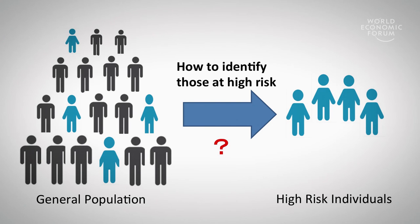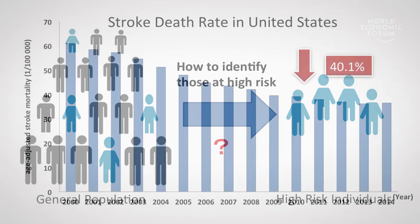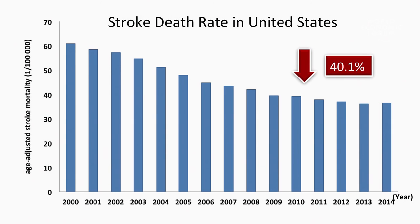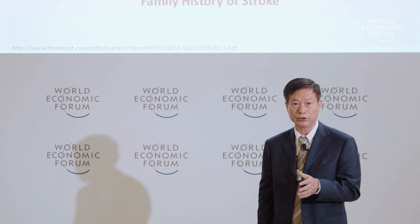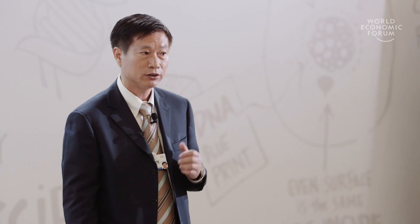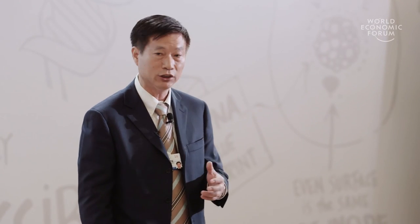How could we identify those at high risk for stroke and prevent the stroke epidemic? In the United States, age-standardized mortality was reduced by 40% in the past 10 years. The major improvement in stroke outcomes came from primary and secondary prevention. If you had close relatives who had a stroke at a younger age, you are more likely to develop stroke — but you cannot change your genetic background or reverse your age; however, there are still things we can do for prevention.